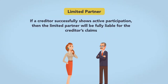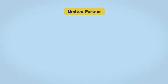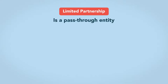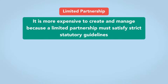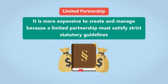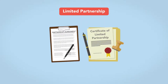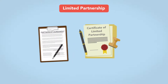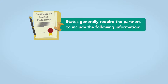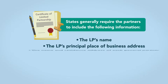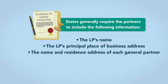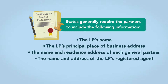She will also lose her status if her creditor can prove that the limited partner represented herself as a general partner or behaved as though she were a general partner. If her creditor successfully shows active participation, then the limited partner will be fully liable for the creditor's claims. Like a general partnership, the limited partnership is a pass-through entity. Unlike a general partnership, it is more expensive to create and manage because a limited partnership must satisfy strict statutory guidelines. In addition to the partnership agreement, the limited partnership must file a certificate of limited partnership with the appropriate state office, including the LP's name, principal place of business address, the name and residence address of each general partner, and the name and address of the LP's registered agent.